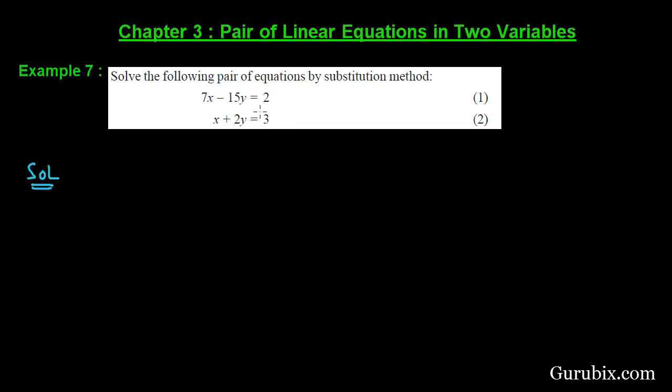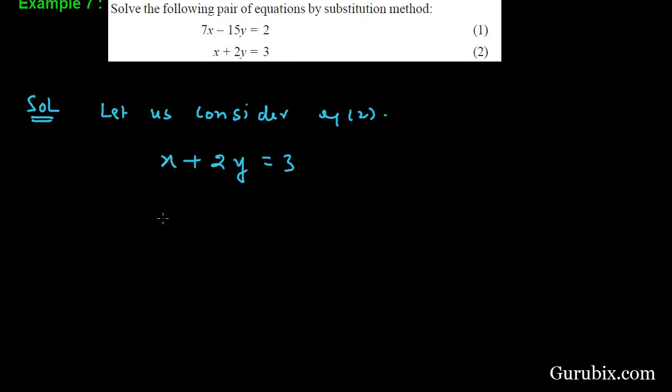We can start with any one of these equations, so let us consider equation number 2. The equation number 2 is x + 2y = 3. Now we shall write this equation in terms of y. Therefore x = 3 - 2y, and now we shall put this value in equation number 1.